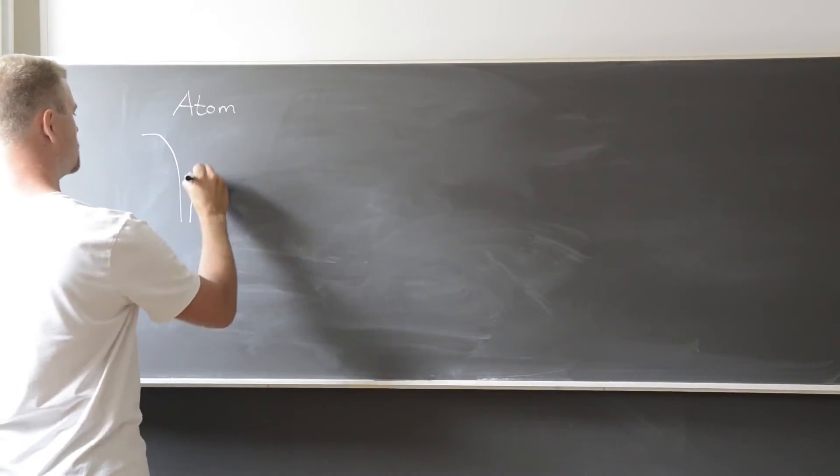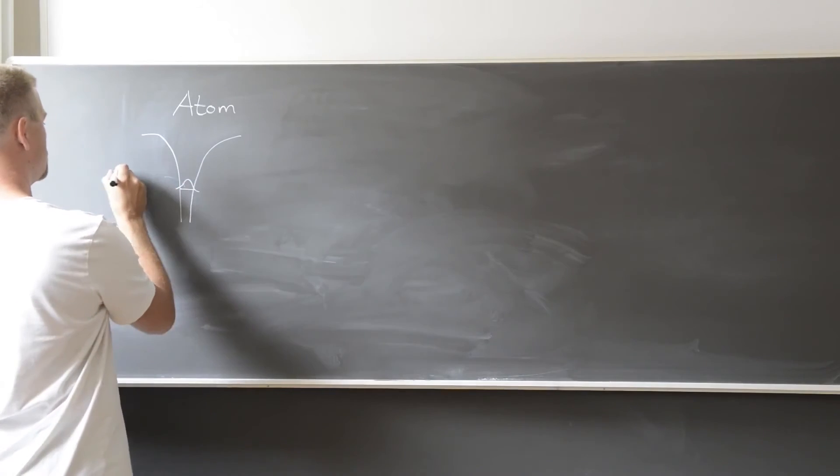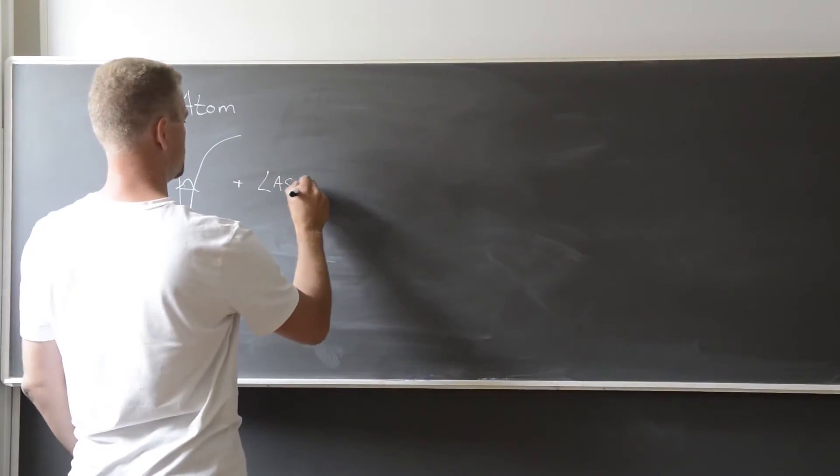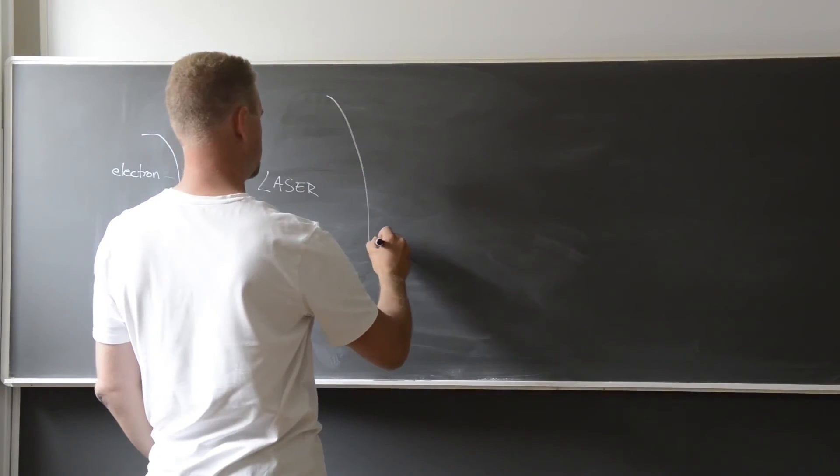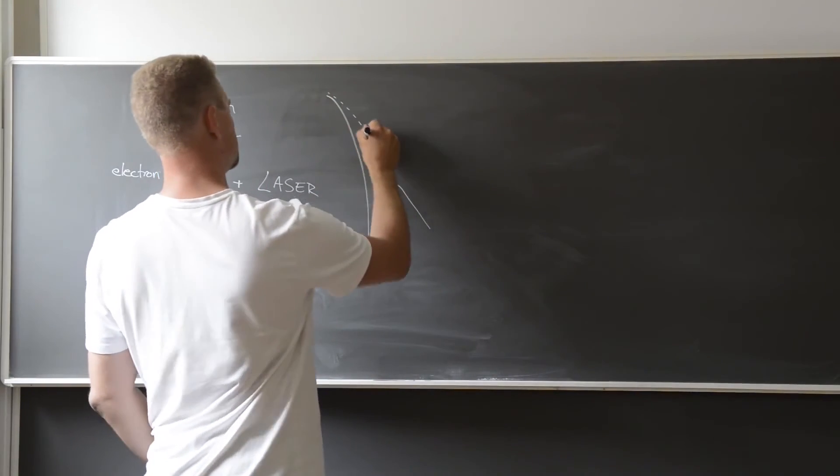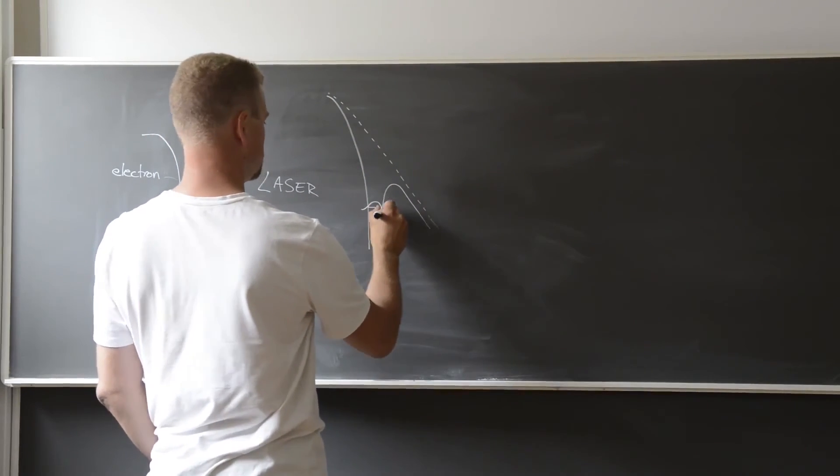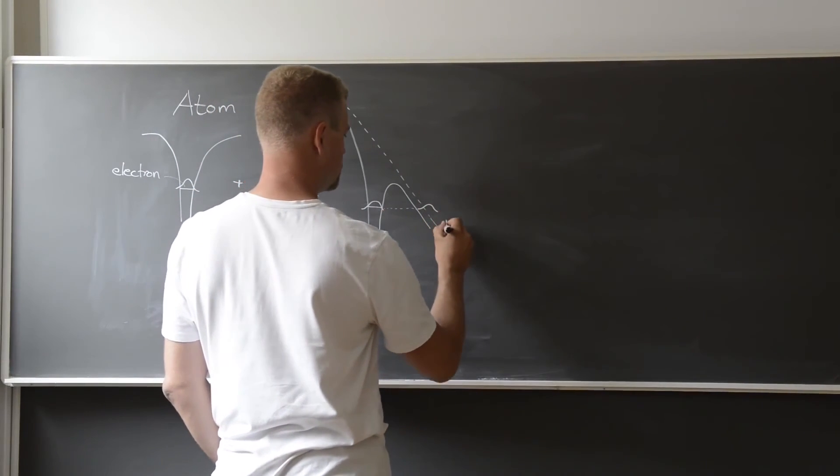In this case we start with an atom, with the electron in its ground state. The laser field is added, and it distorts the potential, making a barrier through which the electron may tunnel out. This tunneling is the first step in the so-called three-step model.